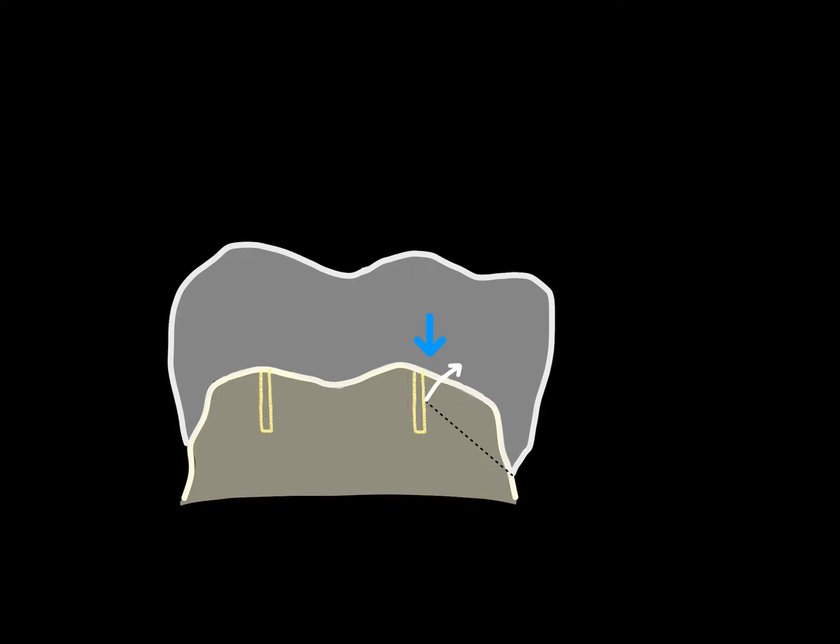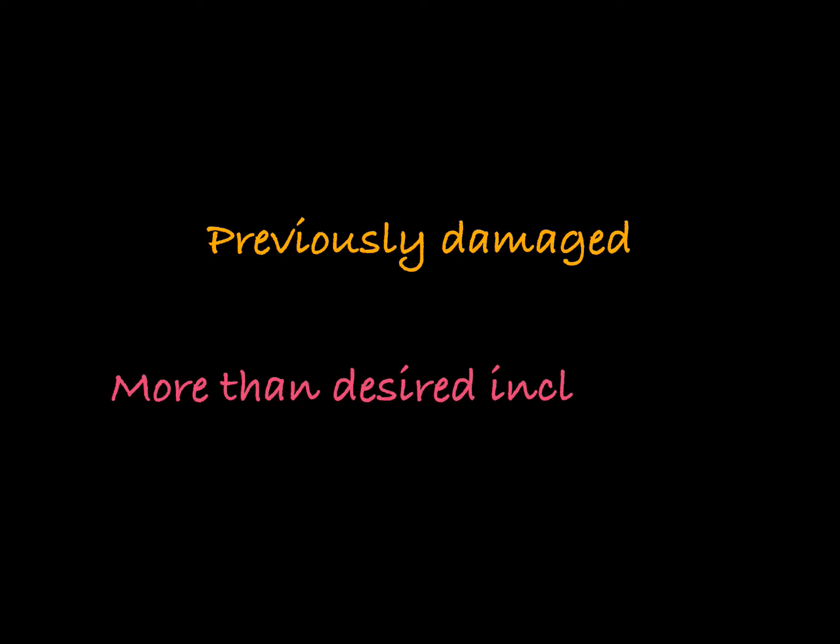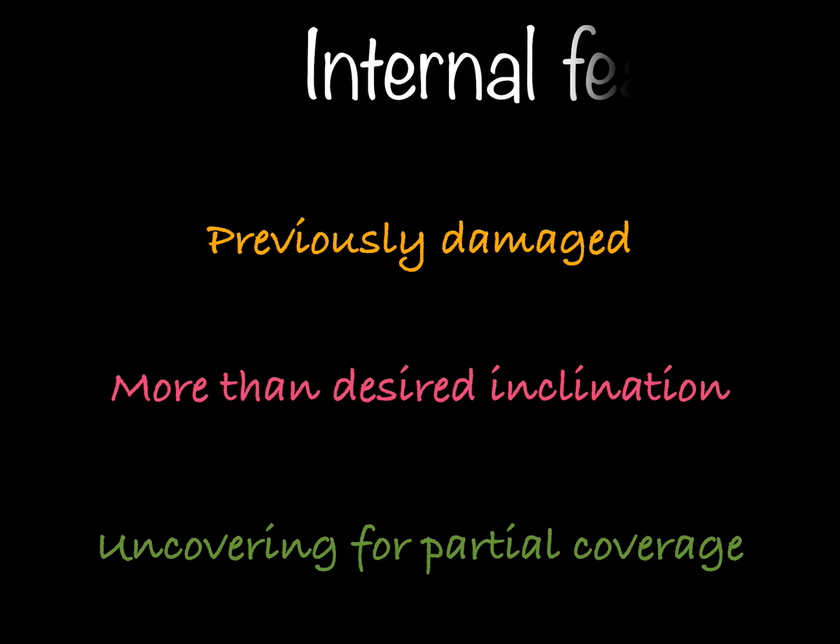There are many situations we can't depend only on taper of opposing axial walls as a retentive feature, just in cases of previously damaged walls, walls with more than needed inclination, or leaving the wall uncovered for partial coverage. We can utilize internal features such as box forms, grooves, and pin holes which are prepared on the axial walls.